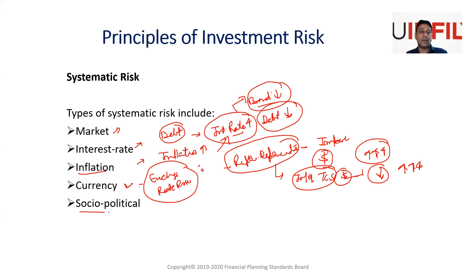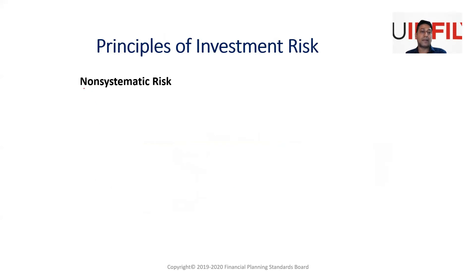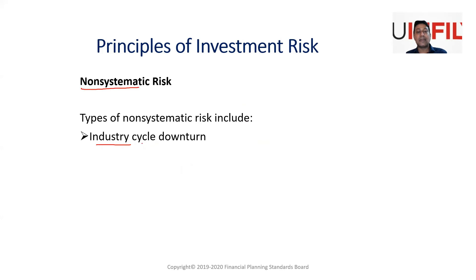Socio-political risk is another major systematic risk. If there is an international war, or elections leading to a government change, these are socio-political systematic risks present in every economy that can impact overall markets. We have seen in the past that government changes lead to substantial market increases or decreases.